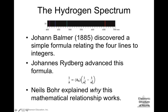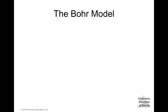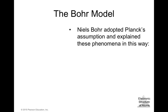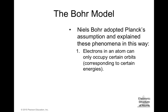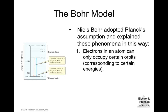Niels Bohr explained this by adopting Planck's assumption. The n values represent energy levels — the states where the electrons are. The emission of light is due to the transition of electrons jumping from one energy state to another. The Bohr model states: first, electrons in an atom can only occupy certain orbits, and these orbits represent specific energies.